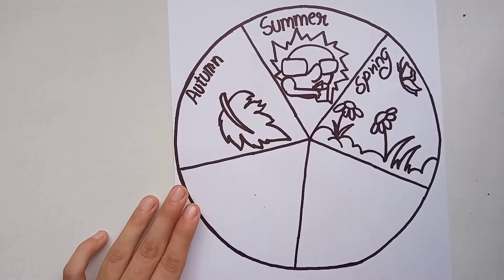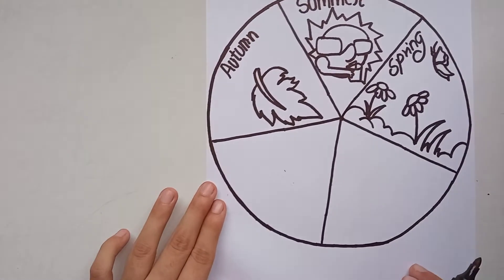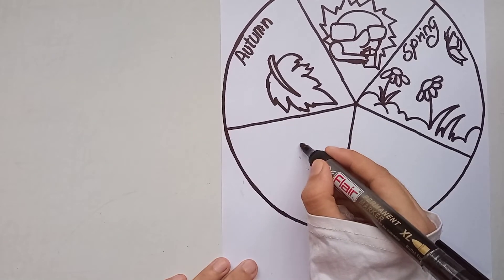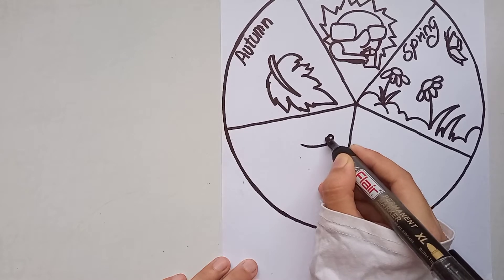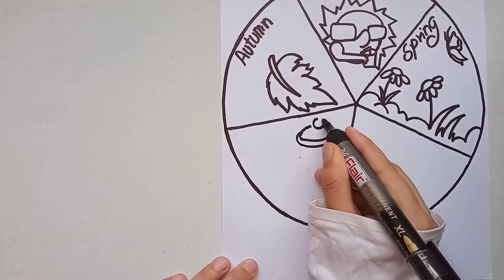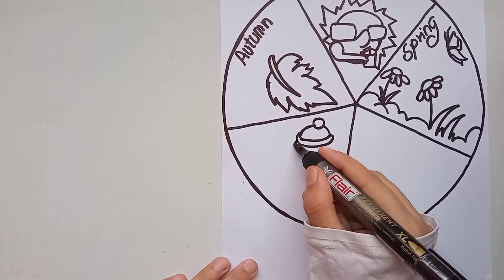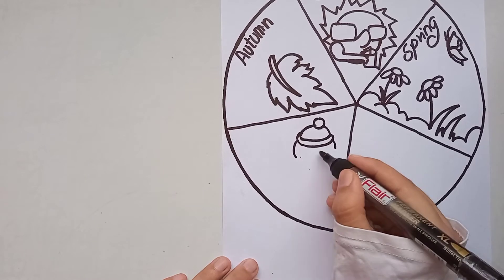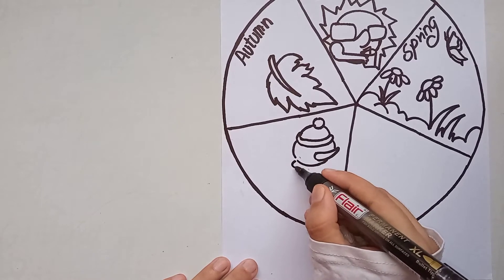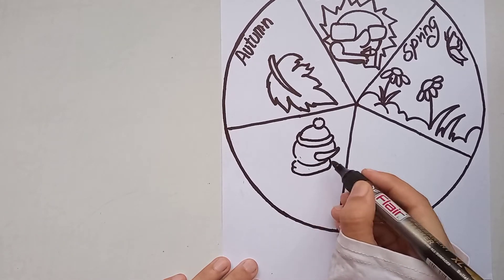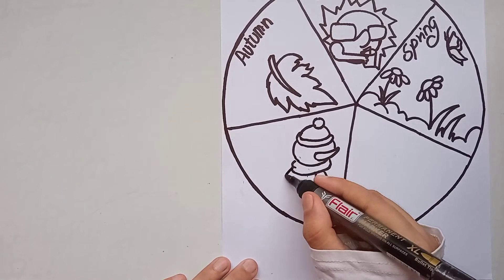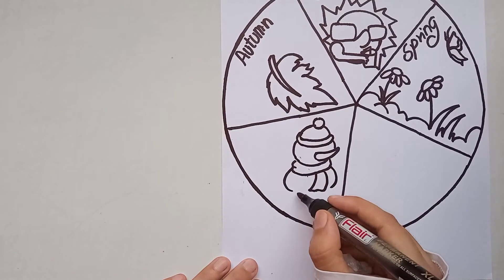This is for spring season. Now I will draw winter season. What comes to mind whenever you think about winter season? Ice, snow, a snowman. So I will make a snowman. This is the cap of the snowman, this is the face, the nose, and the muffler — the snowman is wearing winter clothes: the muffler and cap.